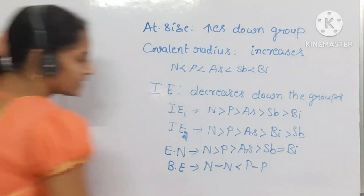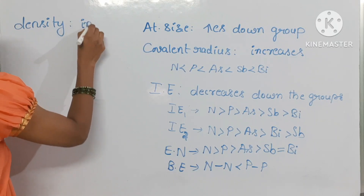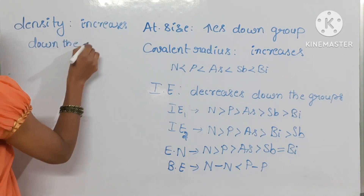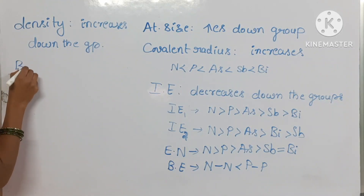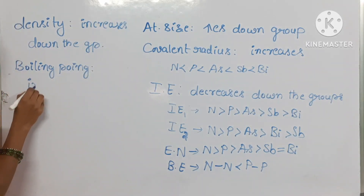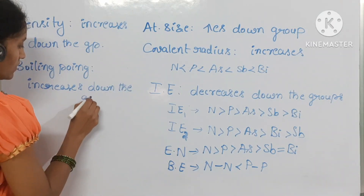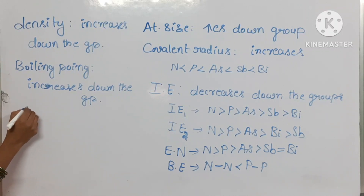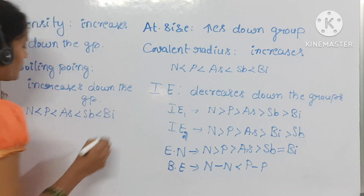Density increases down the group. Boiling point also increases down the group, because as density increases, melting and boiling points automatically increase. The boiling point order is: N < P < As < Sb < Bi.